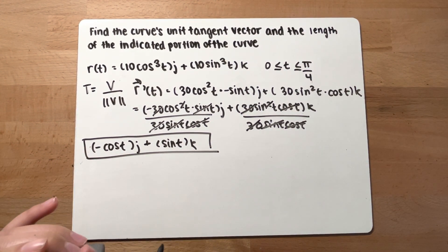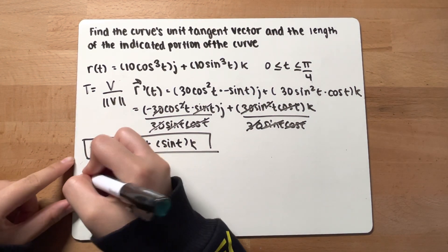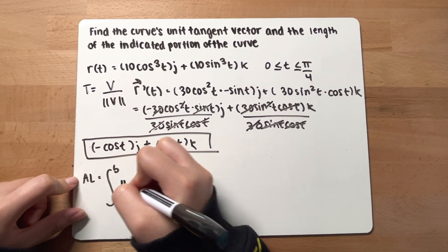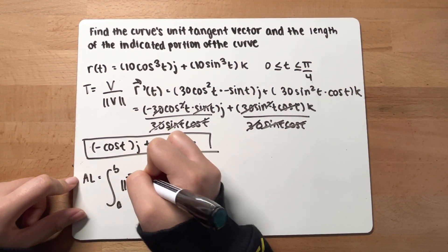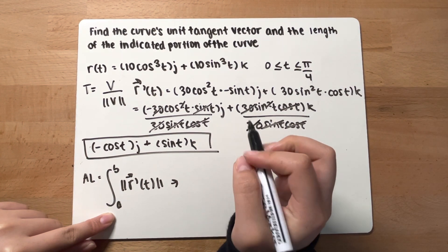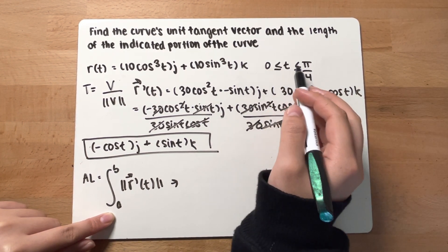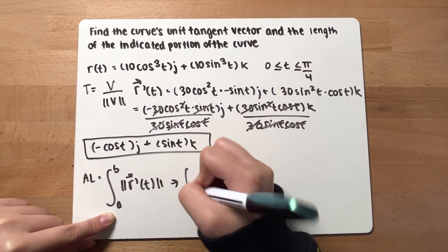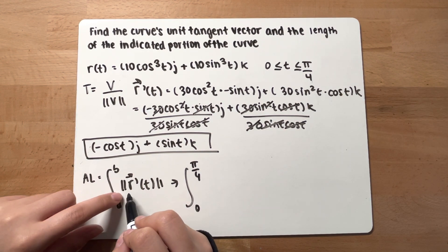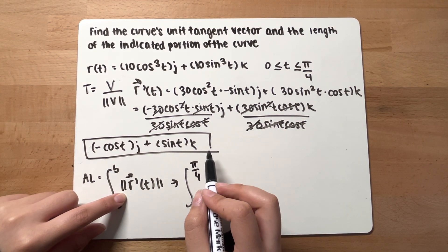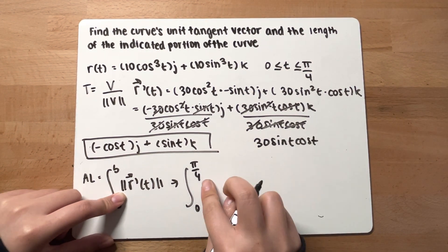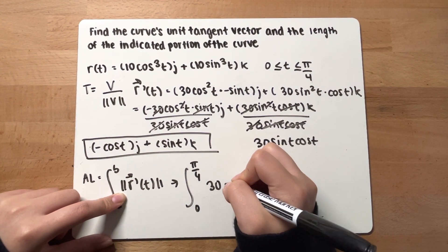Now let's move on to finding the length. To find the arc length, plug into the arc length formula: the integral of the magnitude of the velocity vector. Since t is between 0 and pi over 4, the lower bound A is 0 and the upper bound B is pi over 4. The magnitude of the velocity vector is 30 sine t cosine t, which we found earlier.